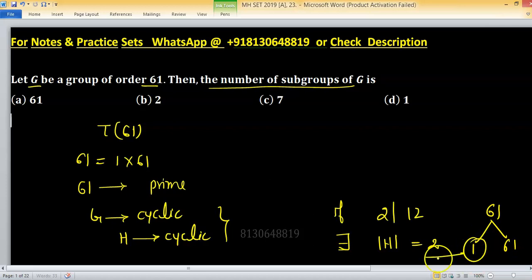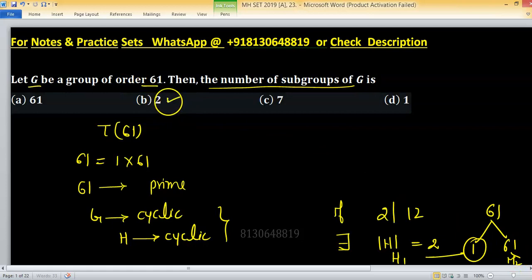For each divisor, there exists a subgroup, so we have H1 and H2. Therefore, there are only 2 subgroups. Option B is right.